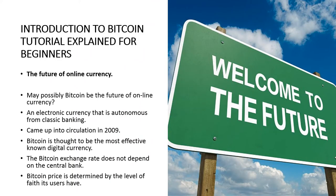The future of online currency — may Bitcoin possibly be the future of online currency? This is only one of the questions frequently asked regarding Bitcoin. Bitcoin is a kind of electronic currency that is autonomous from classic banking and came into circulation in 2009. According to some of the major internet traders, Bitcoin is thought to be the most effective and known digital currency that depends on computer networks to solve sophisticated mathematical problems in order to check and record the specifics of each transaction made.